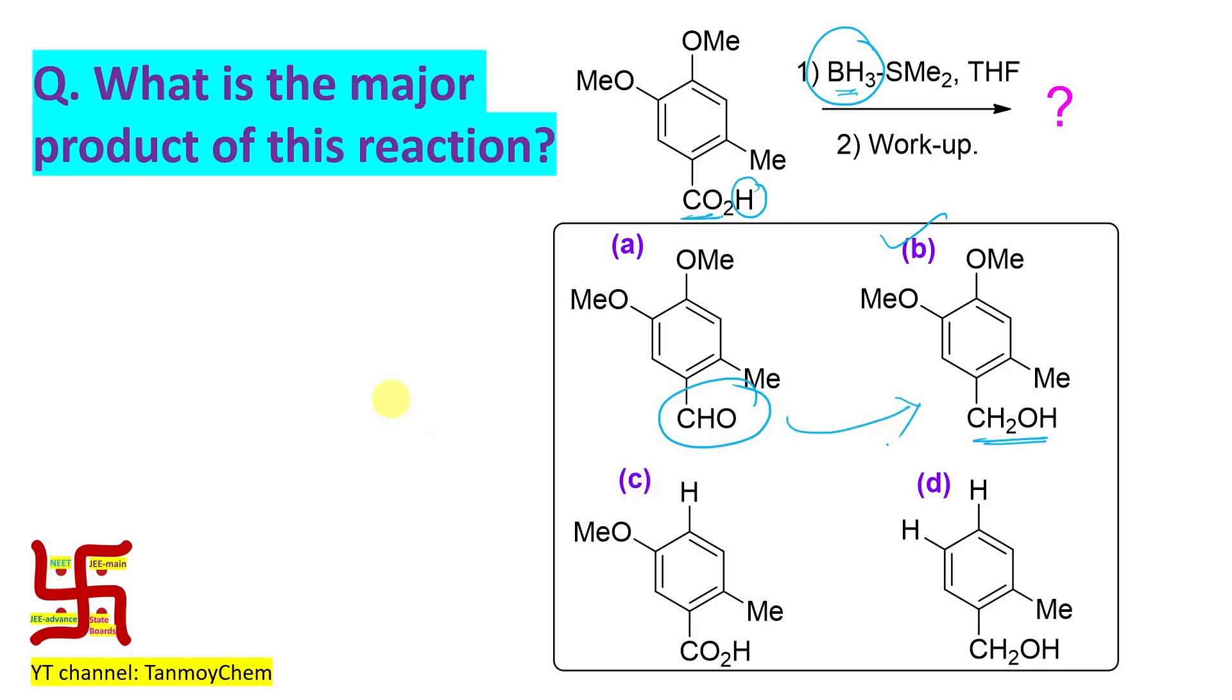I mean, aldehyde because we know aldehyde could very easily be reduced with sodium borohydride. That is also a BH bond and BH bond is reducing. It is a hydride nature. So this is, this will be the product. So it cannot be the product. If it produces aldehyde, it will be converted to this option B.